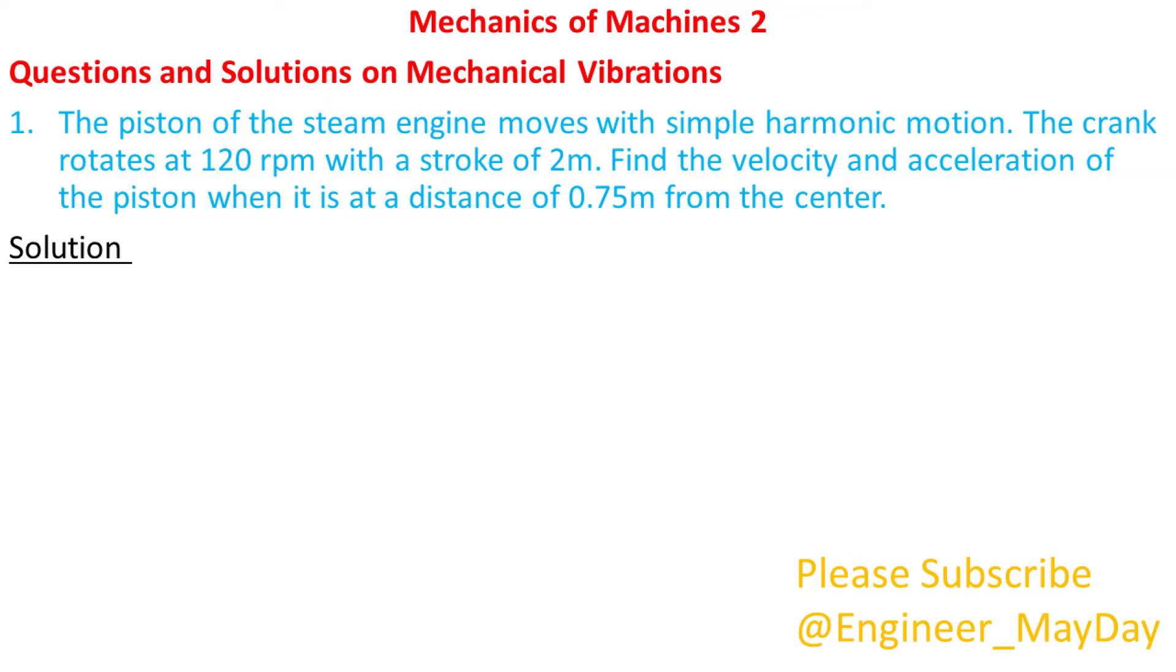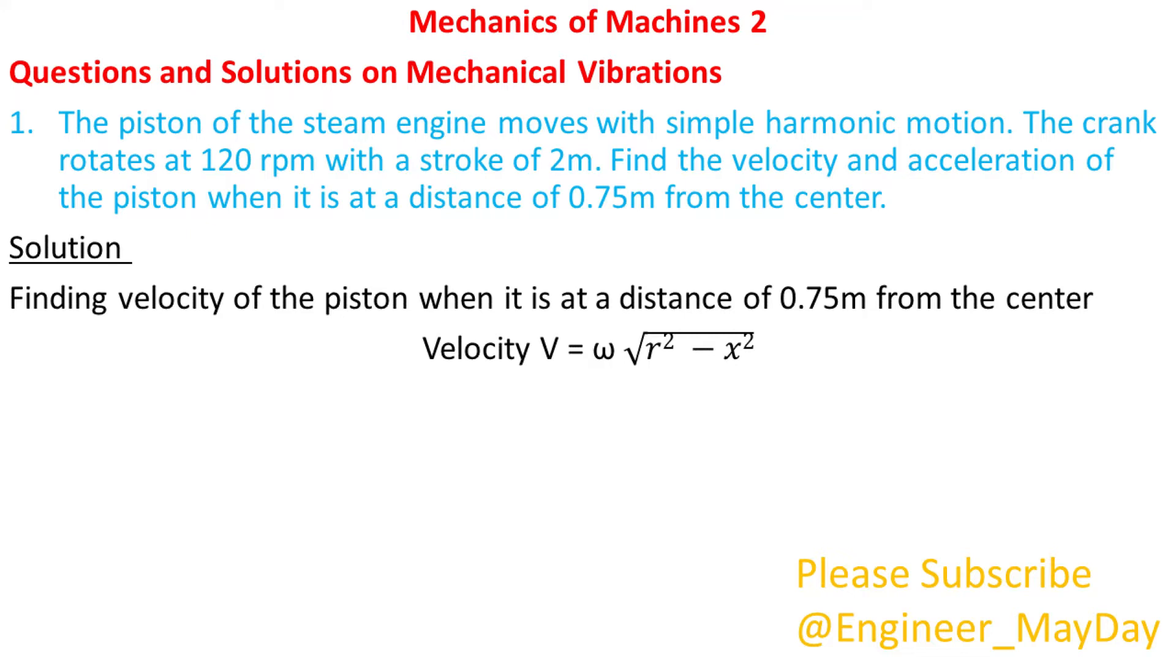Solution. Finding velocity of the piston when it is at a distance of 0.75 meters from the center. Velocity V is given by angular velocity omega multiplied by the square root of radius r squared minus distance x squared.